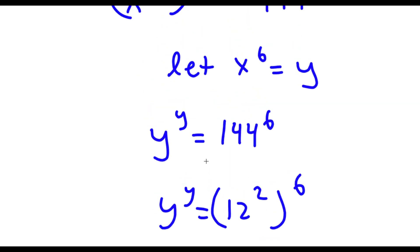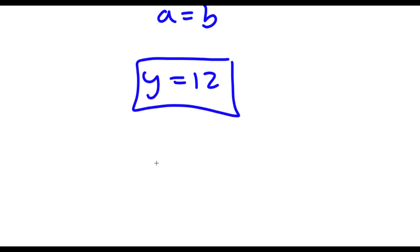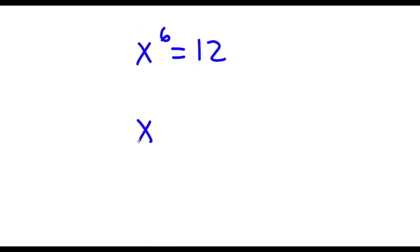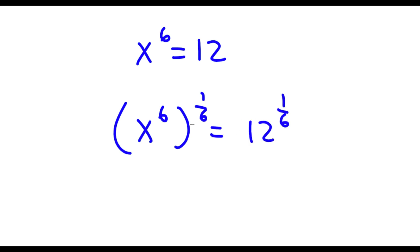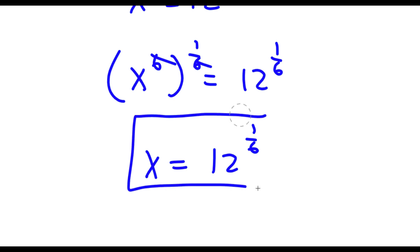However, remember we're not solving for y, we're solving for x. And x to the power of 6 equals y, so now that we know y is 12, this means x to the power of 6 is equal to 12. To solve this, I'm going to take the power of 1 over 6 on both sides. So I have x to the power of 6 to the power of 1 over 6 is equal to 12 to the power of 1 over 6. Now 6 times 1 over 6 cancels out, so I'm left with x is equal to 12 to the power of 1 over 6. So this is my answer.